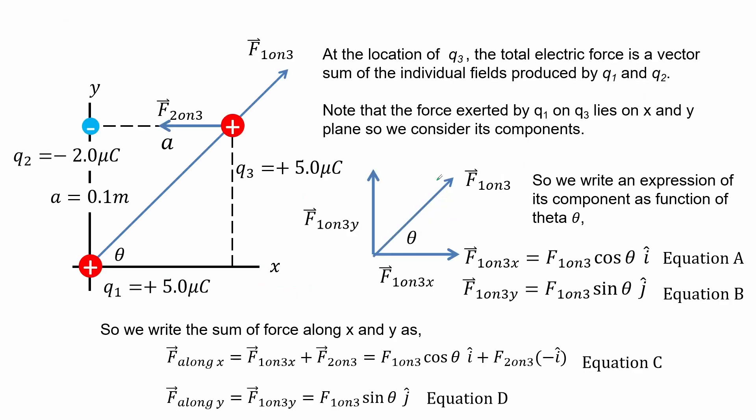At the location of Q3, the total electric force is a vector sum of the individual fields produced by Q1 and Q2. Note that the force exerted by Q1 on Q3 lies on the X and Y plane, so we consider its components. We write an expression of its component as a function of theta shown in Equations A and B. We write the sum of force along X and Y as in Equations C and D.